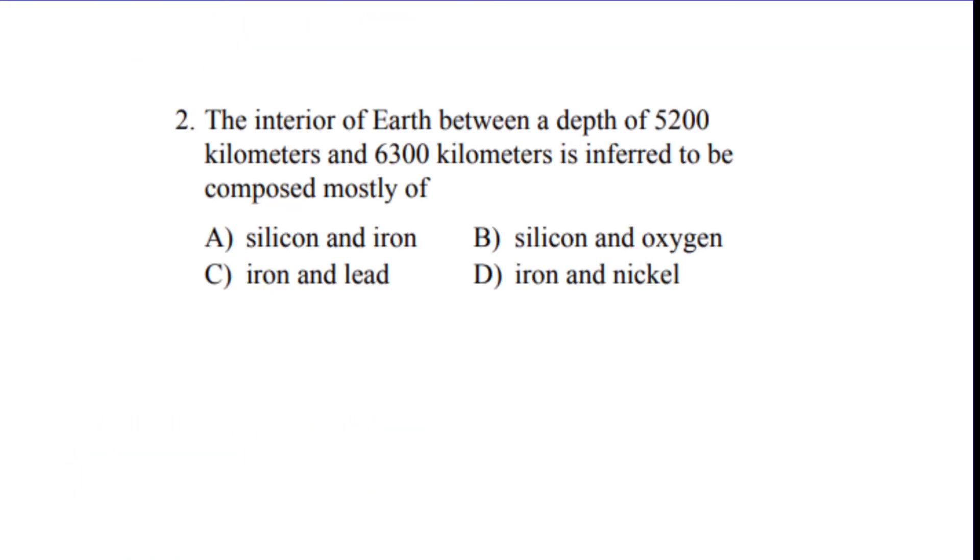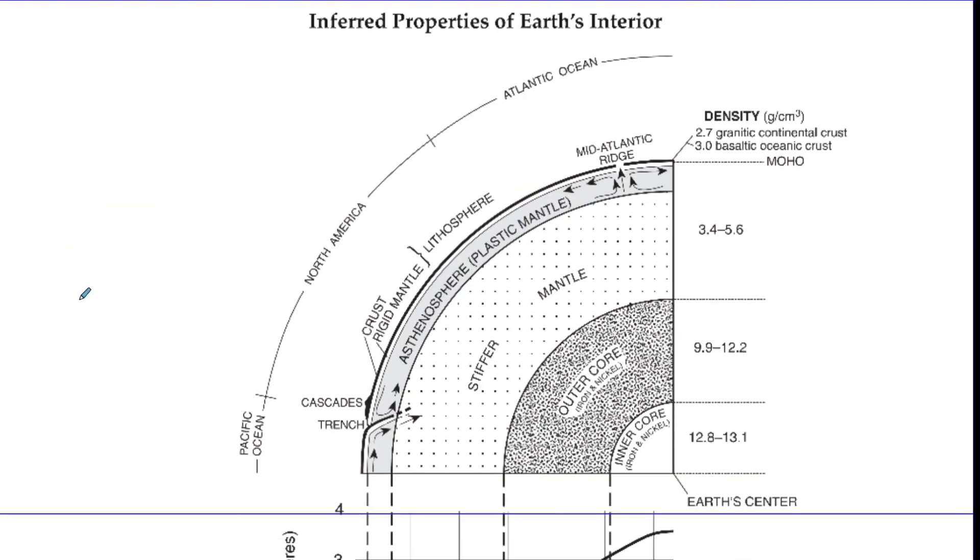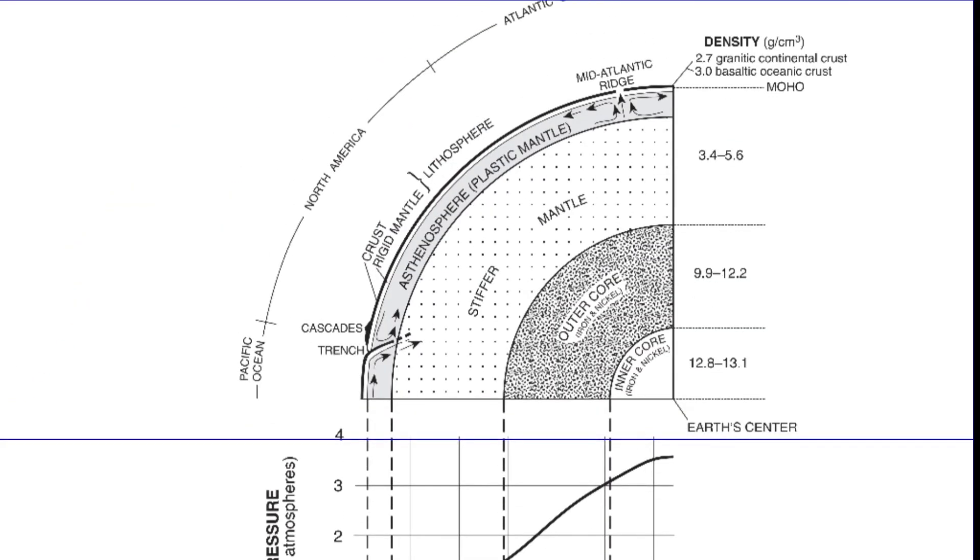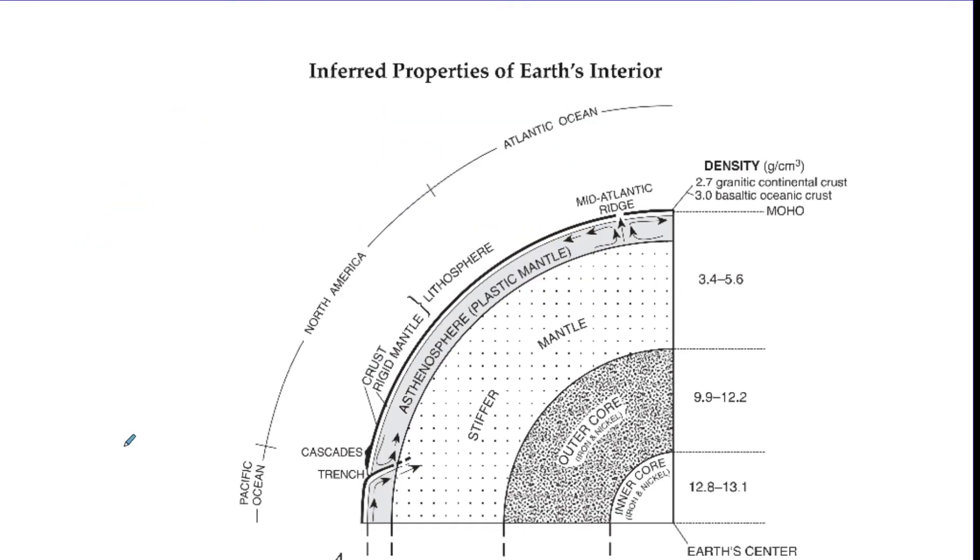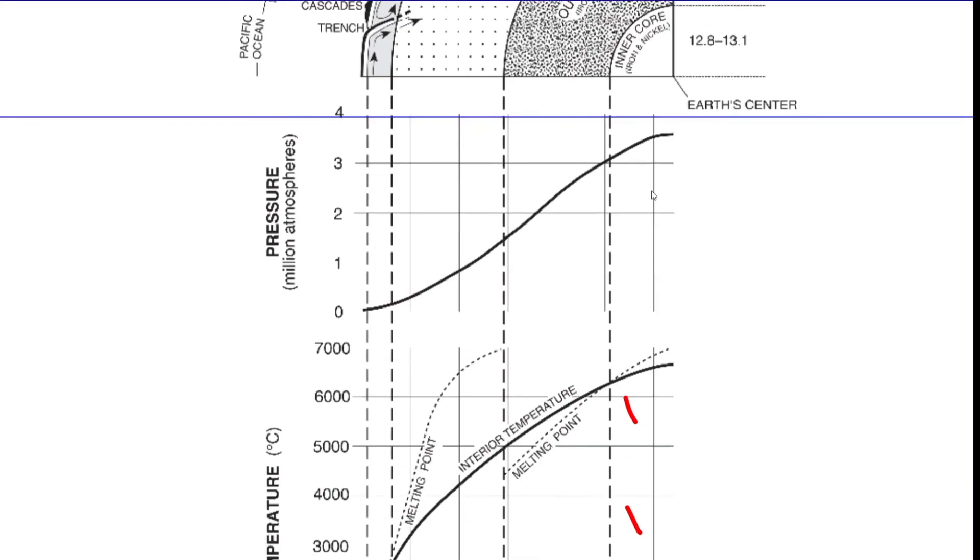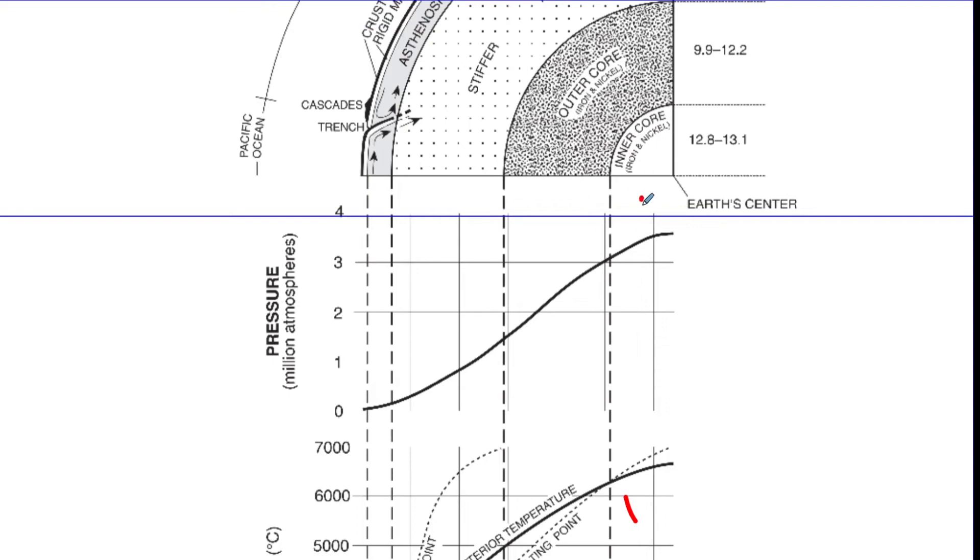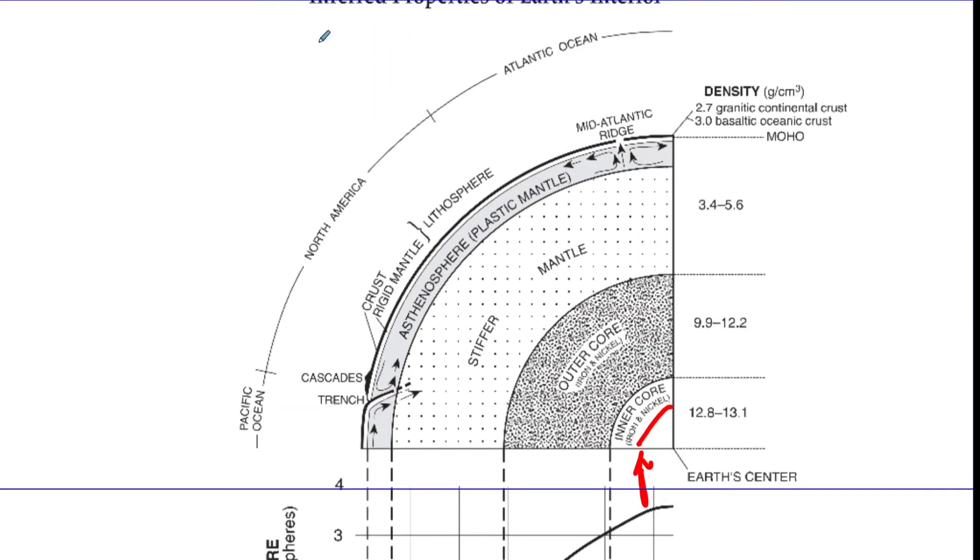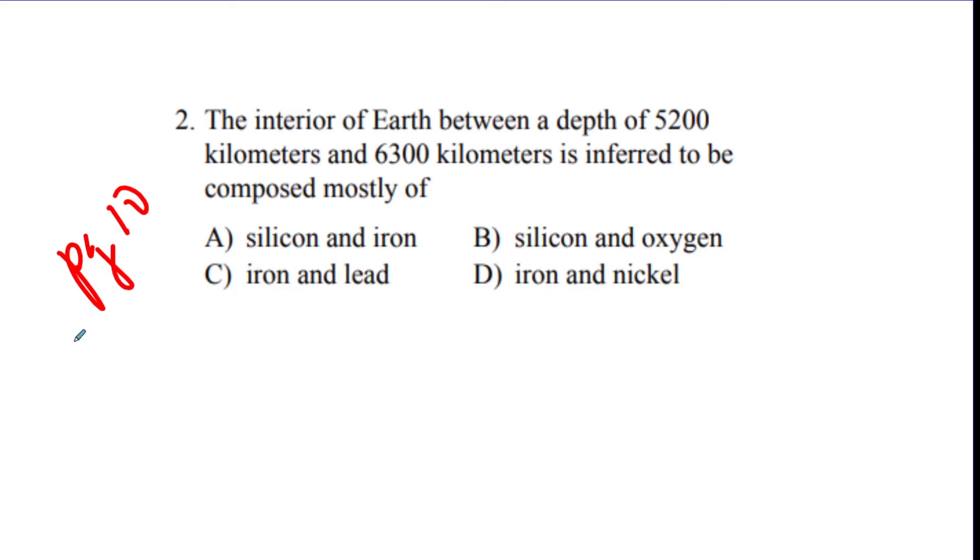Number two, the interior of the Earth between a depth of 5,200 and 6,300 kilometers is inferred to be composed of mostly what? So for this one, you want to go to page 10 on the reference table. Go to the depth that it tells you. So 5,200 and 6,300. Looks like we are here. Which means we're in the inner core and it says it's made of iron and nickel. D.